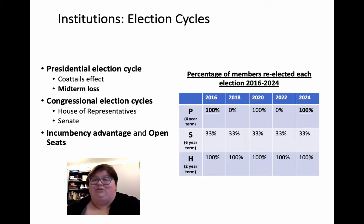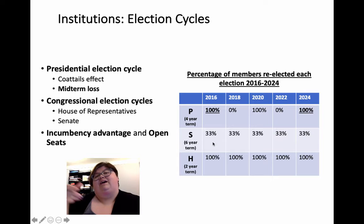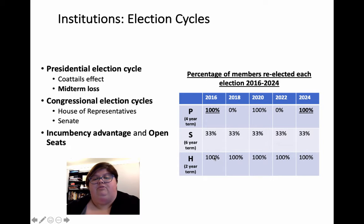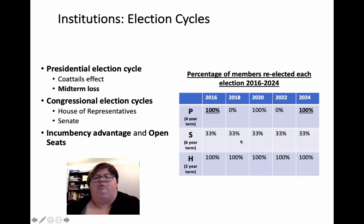Midterm loss is when two years later, the president's party usually loses seats in the legislative body. In 2016, when Trump was elected, 33% of the Senate was up for grabs — remember, the Senate is staggered in terms, all six-year terms but they don't all expire at the same time — and 100% of the House is up every two years. In 2018, there was no president on the ballot, but these elections are often looked at as a referendum on the president. That did happen significantly in the House, though not as much in the Senate, for President Trump in 2018.